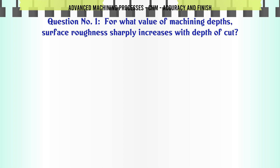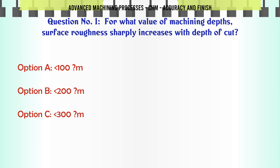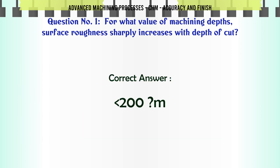For what value of machining depth does surface roughness sharply increase with depth of cut? A. 100m. B. 200m. C. 300m. D. 400m. The correct answer is 200m.